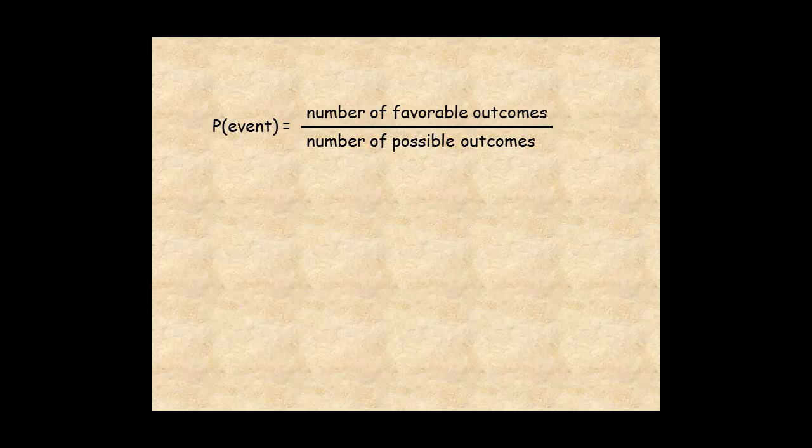The complement of an event is the probability that it will not occur. The sum of the probability of an event and its complement is 1.